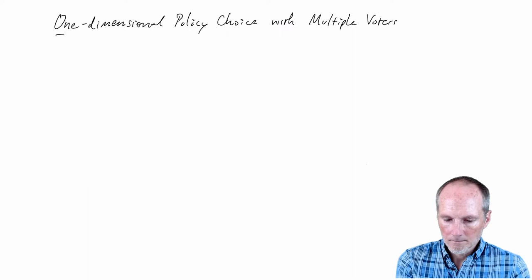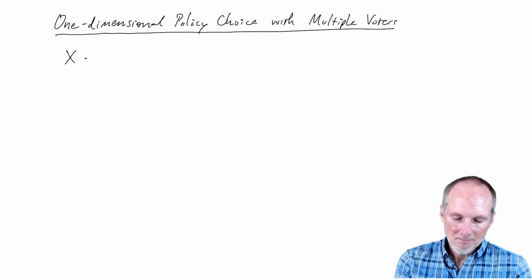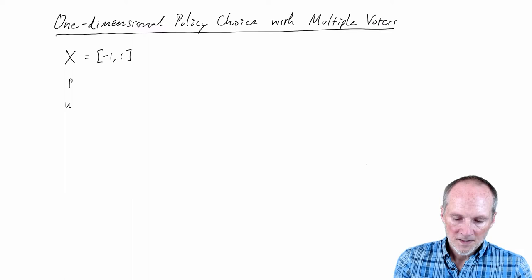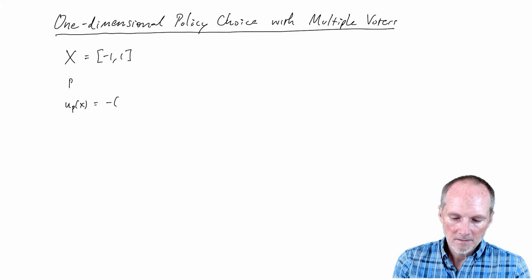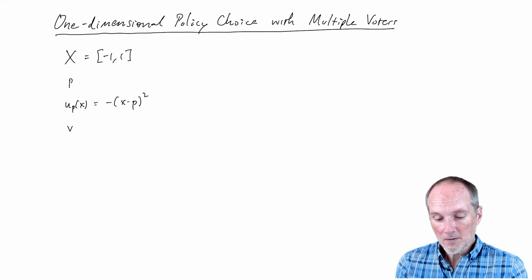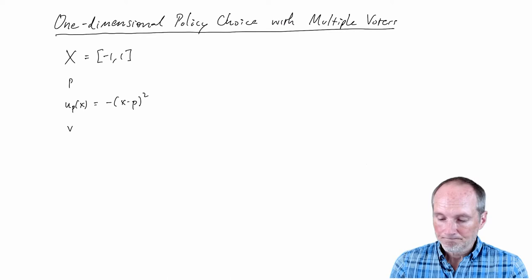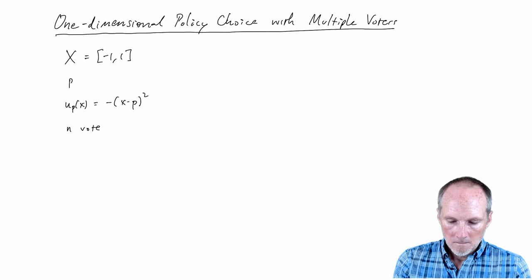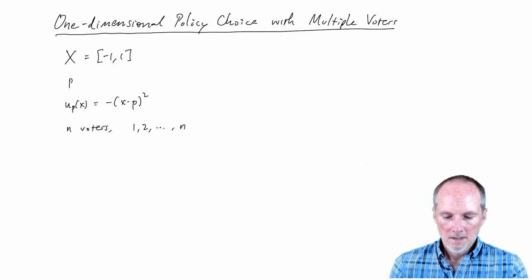A lot of this stays the same. Formally, we have a policy space and a politician with an ideal point — the politician prefers policies closer to their ideal point. Now instead of one voter, we have n voters, numbered 1 through n, where n is some natural number.